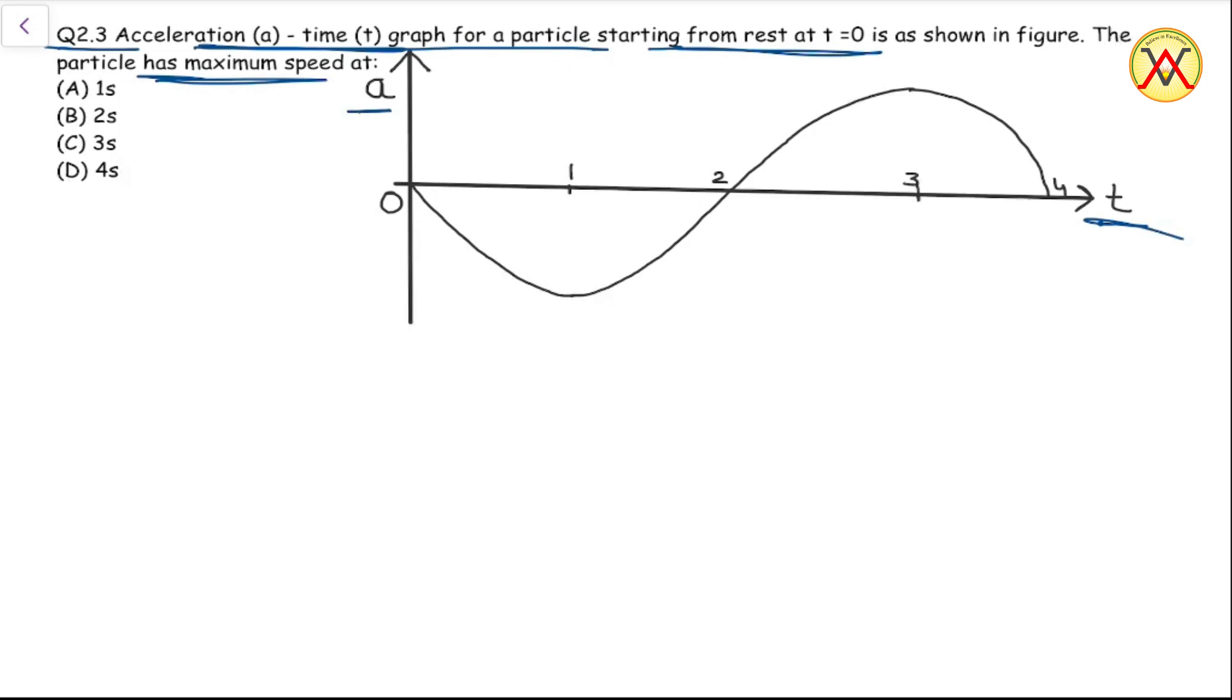Let's say we need to find out its velocity at time t equal to one second. Then this will be given by this area. As we can see, this area will have a negative value which will keep on increasing up to two seconds.